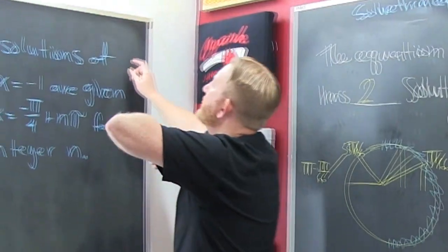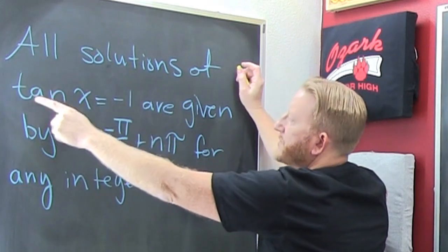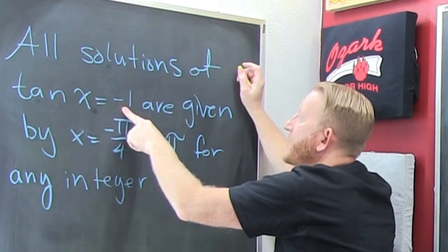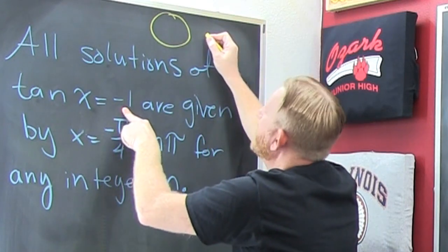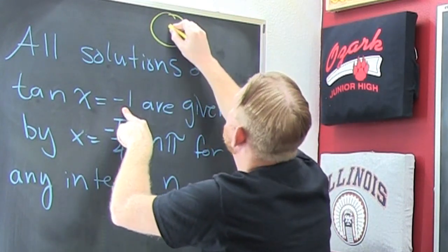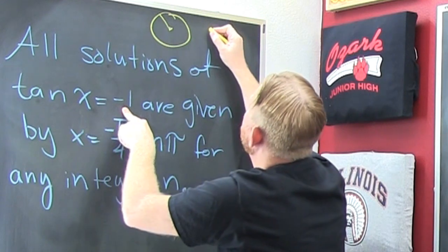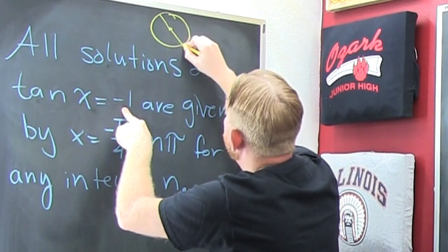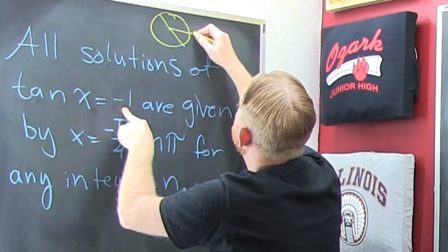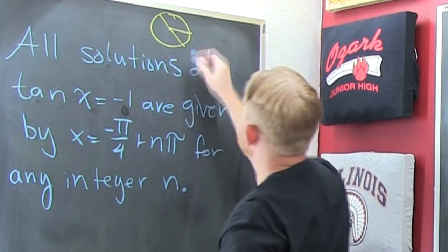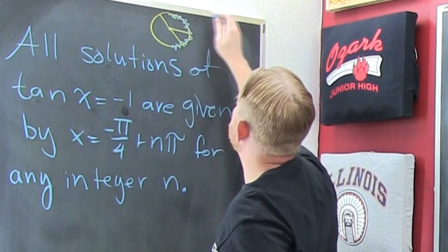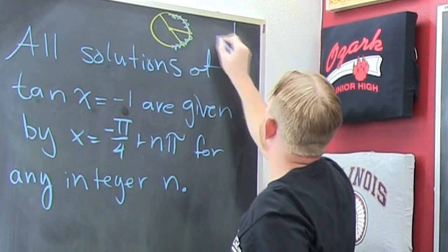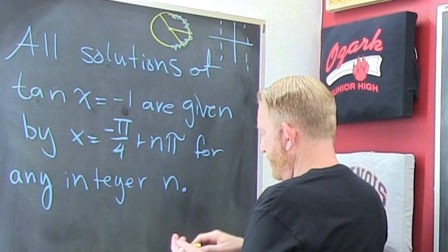One more! All the solutions of the tangent of x equals minus one. Where's that? That's where the sine and the cosine are the same but opposite sign. So that's here. Boom. And here. Boom. So the inverse tangent is restricted to these. Wait, no it's not. Yes it is.